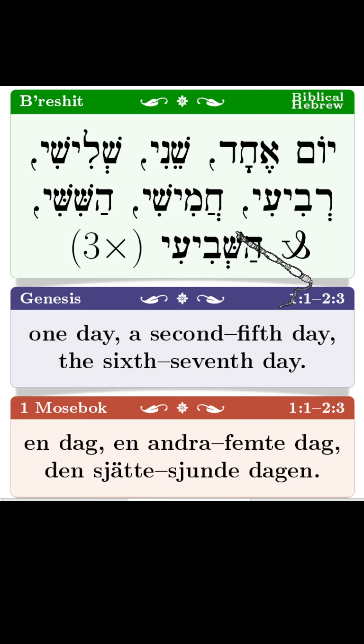Something happened on the sixth day that made these days definite. Basically there were two things: first, the living creatures on the earth were made — though living creatures had already been made in the water and in the sky — and then there also was the man that was created.